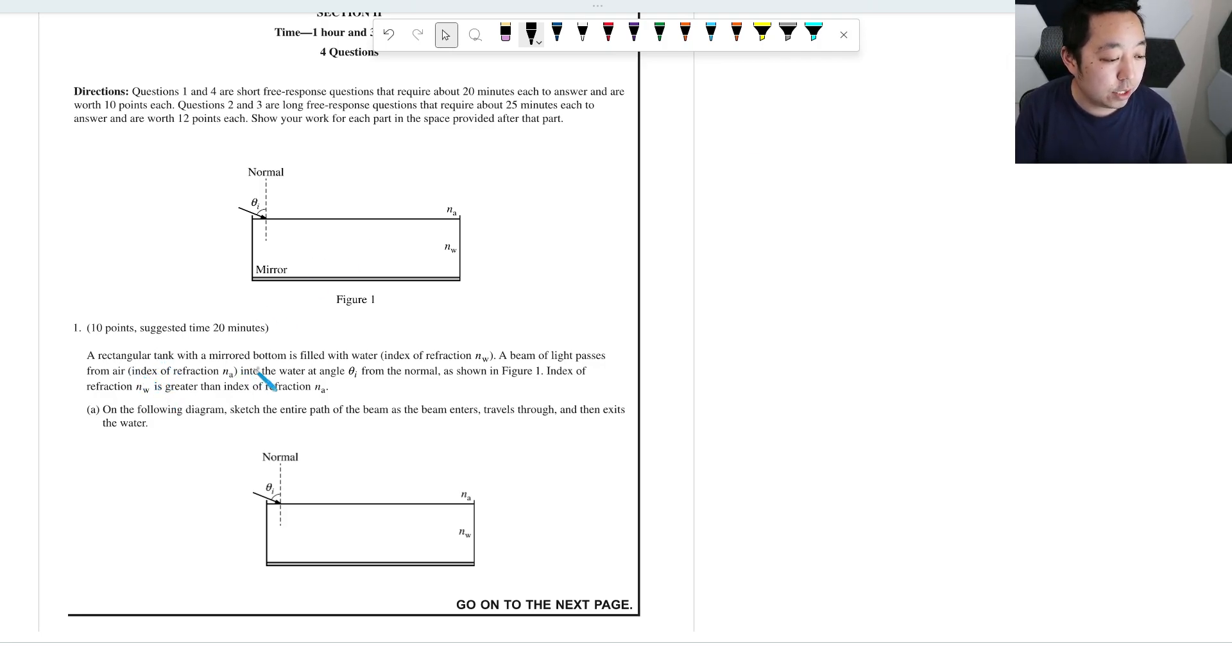A rectangular tank with a mirrored bottom is filled with water. Index of refraction NW. A beam of light passes from air into the water at angle theta I from the normal. Index of refraction NW is greater than the index of refraction of NA. On the following diagram, sketch the entire path of the beam as it enters, travels through, and then exits the water.